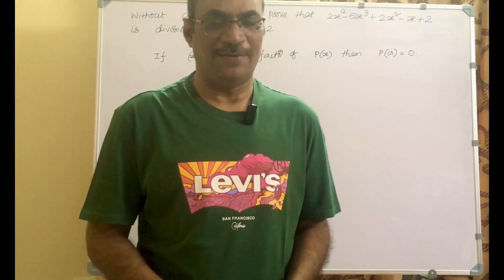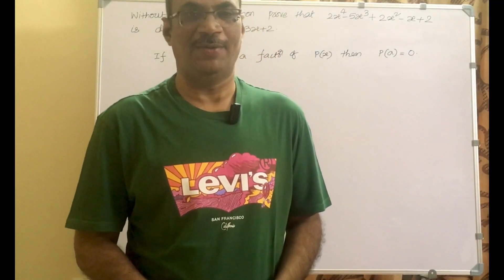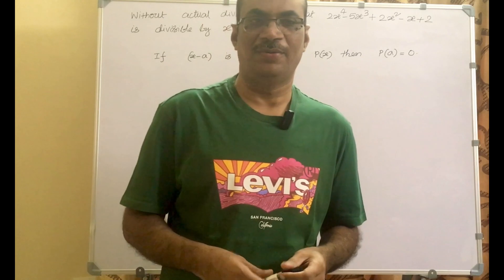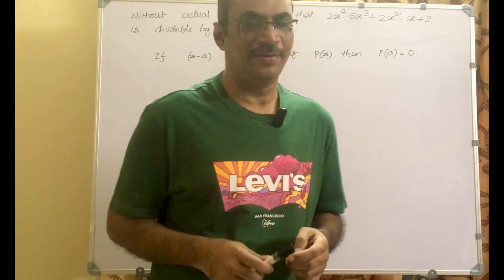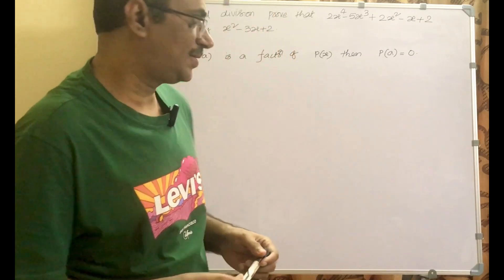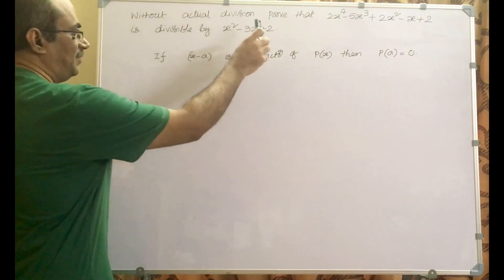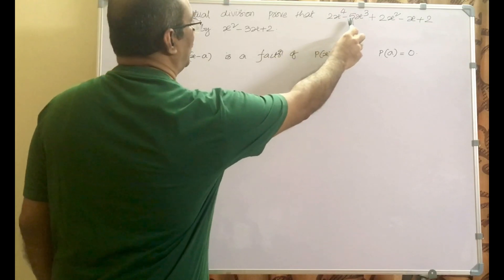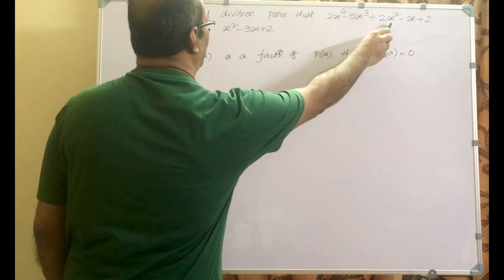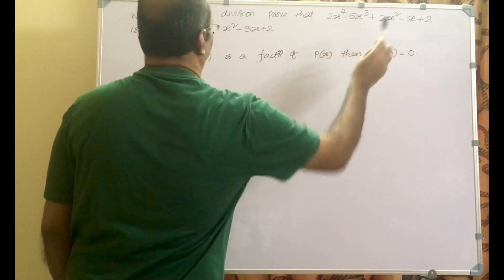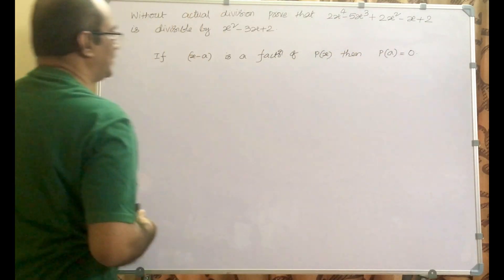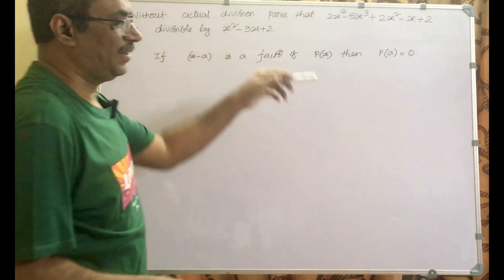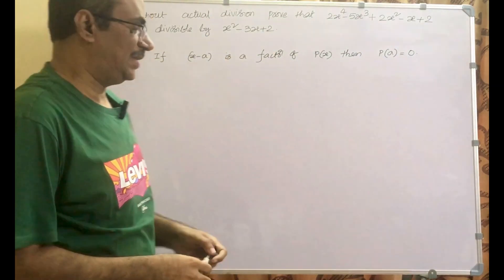Hello friends, welcome back, hearty welcome to you. Let us look at this problem related to ninth grade polynomials. Without actual division, prove that 2x to the power of 4 minus 5x cube plus 2x square minus x plus 2 is divisible by x square minus 3x plus 2.